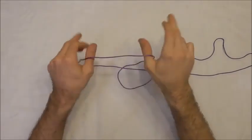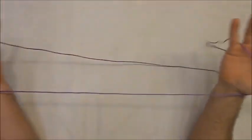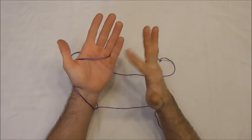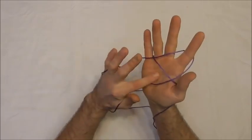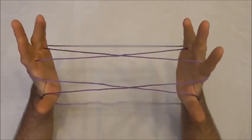I want to start with my loop of string across my palms in position 1 and then pick up the palm strings with my pointer fingers to do opening A.